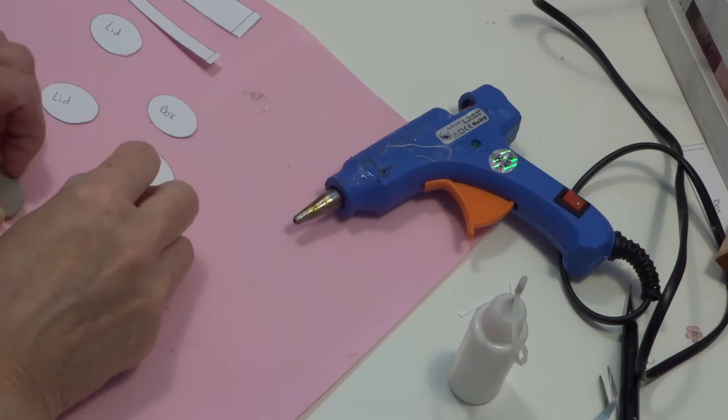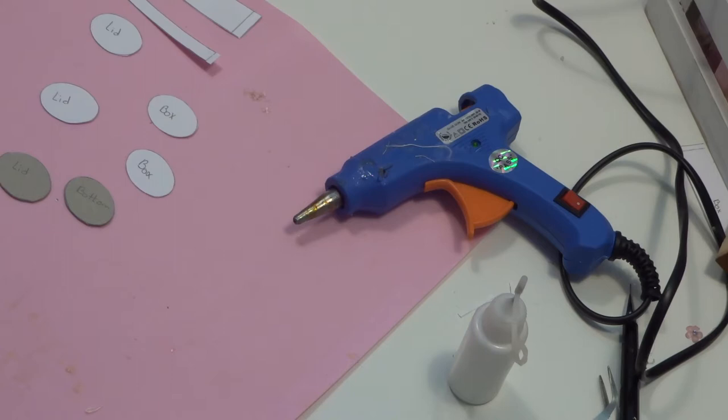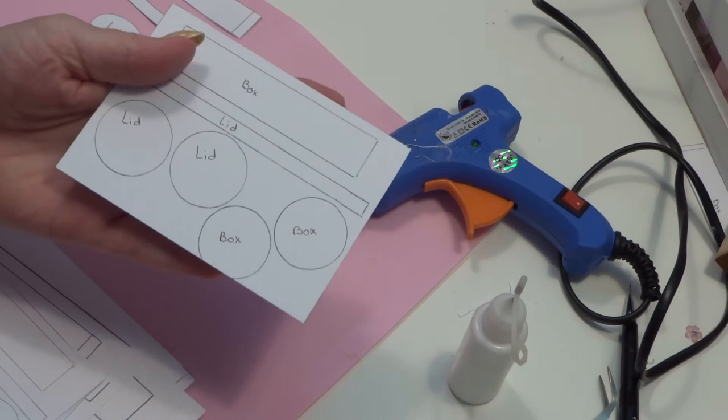For round boxes you can use a circle punch, but you can also use a coin or a round object and you draw the line.